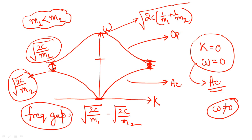The gap between both the frequencies — the frequency gap — will be root 2c upon m1 minus root 2c upon m2. Now there are two different things: I have considered the frequency gap, and now I am going to talk about the bandwidth.